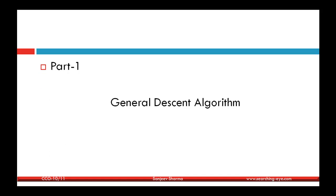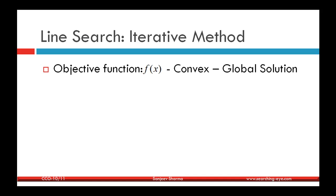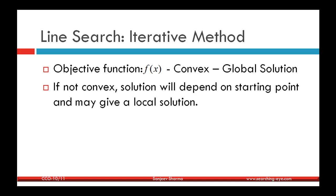Let's move on to the first part: general descent algorithms. The objective function is assumed to be convex, so it has a global solution. If the function is not convex, it may have many local solutions, and which one the algorithm finds depends on the starting point. For non-convex problems, the starting point plays a very important role.